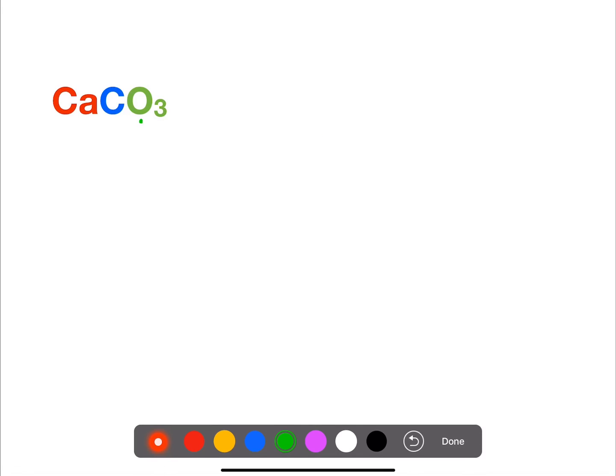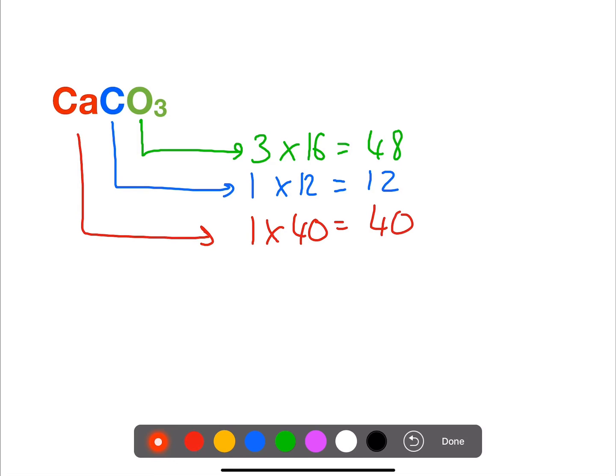In our final example we have three elements again. So we have three times 16 for oxygen, we have one times 12 for carbon, and one times 40 for calcium, giving us a total of 100 for calcium carbonate.